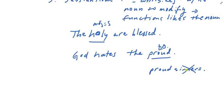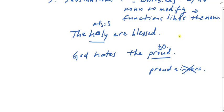Attributive adjectives always occur with a noun and tell you what kind of noun it is. So I could say 'the holy are blessed men' and then 'blessed' would be attributive. But if I just say 'the holy are blessed,' then 'blessed' is functioning as a predicate adjective — and it's actually a participle, which we'll get to several chapters hence.